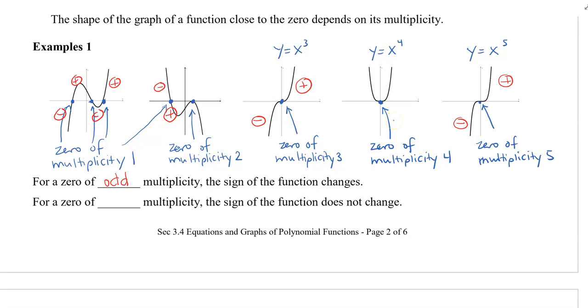But when we take a look at the zero of multiplicity for the even ones, the sign of the function does not change. So you can see that for the zero multiplicity two... Actually, I just noticed I have this incorrect. I'm just going to change this back. So this should be positive and this should be negative.